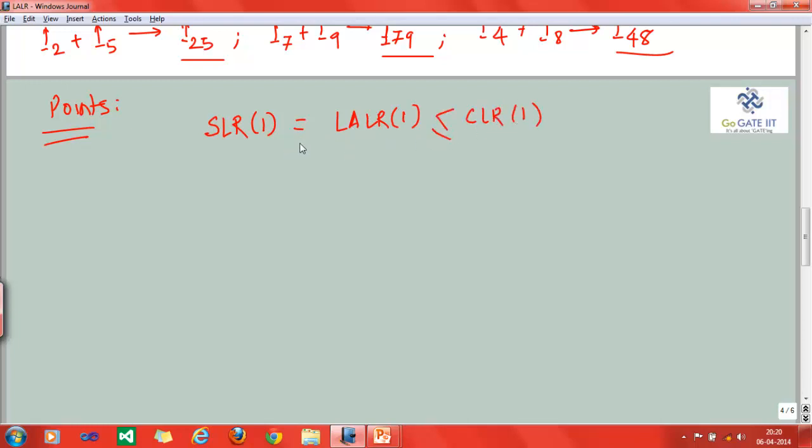Less than or equals to, or equals to—don't get confused. This is all with respect to the table size we have here. Similarly, second point: you can note it down as LR(0) = SLR(1) = LALR(1) ≤ CLR(1). You can notice from these two derivations that the table size of CLR(1) in both cases is always greater than or equal to LALR(1).